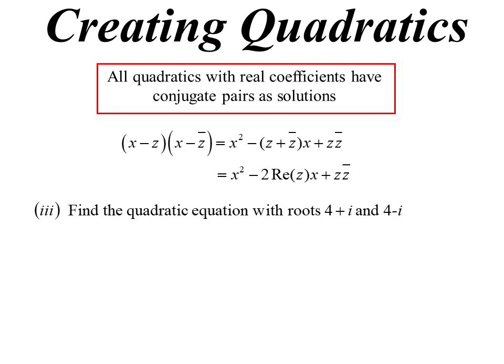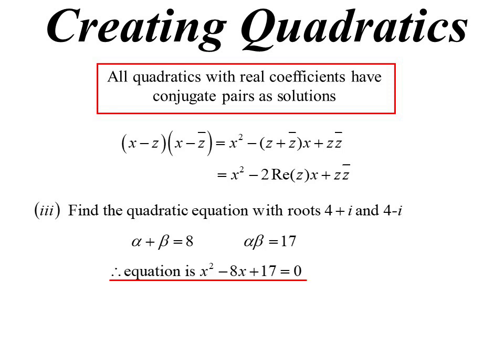We know the solutions are 4 plus i and 4 minus i — what quadratic did they come from? I can see straight away: the sum of the roots is twice the real part, which is 8, and the product of the roots is the sum of two squares, so 16 plus 1 equals 17. My quadratic must have been x squared minus 8x plus 17 equals 0.